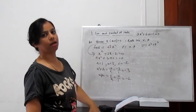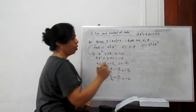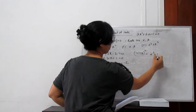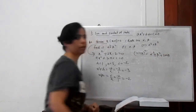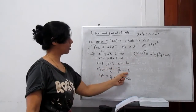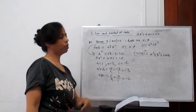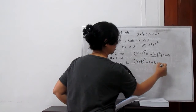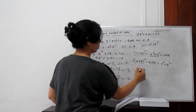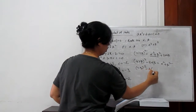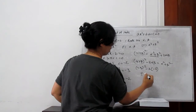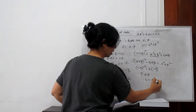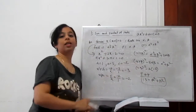We need to find alpha² + beta². We know (alpha + beta)² = alpha² + beta² + 2·alpha·beta. So alpha² + beta² = (alpha + beta)² - 2·alpha·beta. Substituting: (-3)² - 2(-2) = 9 + 4 = 13. So alpha² + beta² = 13.